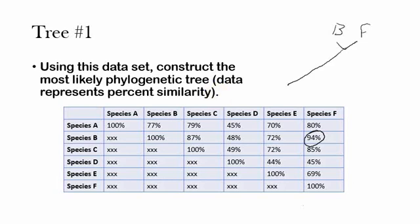Next we're going to look at what are the next closest related species to species B and species F. Species B and C have 87 percent similarity, and C and F it's 85 percent. Those two numbers, 87 and 85, are the next highest percent similarities of any of these other organisms. So we're going to put species C right here as the next closest species.